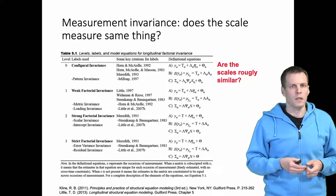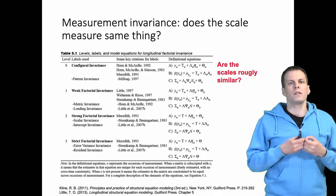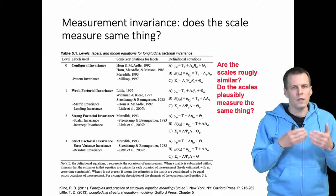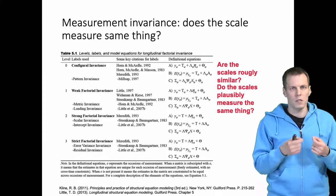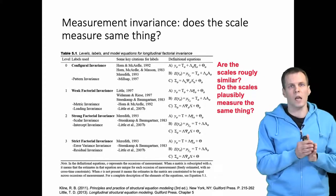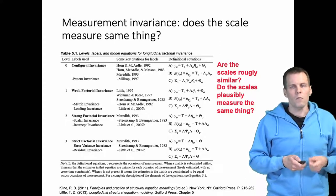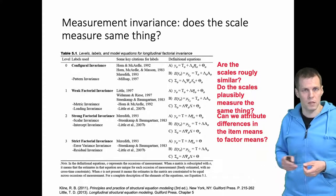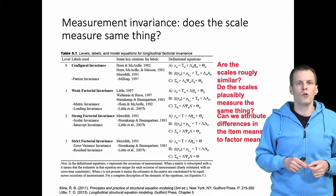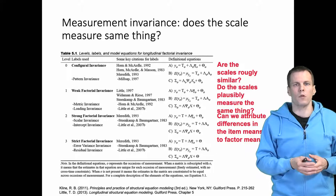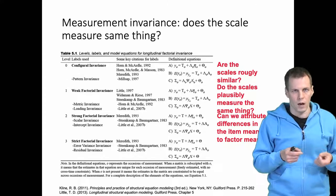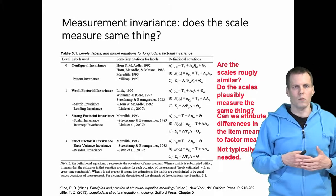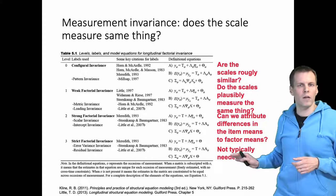Configural invariance is simply model testing with nothing special about it. The actual invariance testing sequence then follows with weak factorial invariance — we test whether the scales plausibly measure the same thing on the same scale by constraining factorial loadings to be equal across occasions or contexts. Next is strong factorial invariance, where we look at item intercepts and ask if differences in item means can be attributed to differences in the latent variables rather than differences in how the items work across contexts. Strict factorial invariance, which examines error variances, is typically not required or tested.